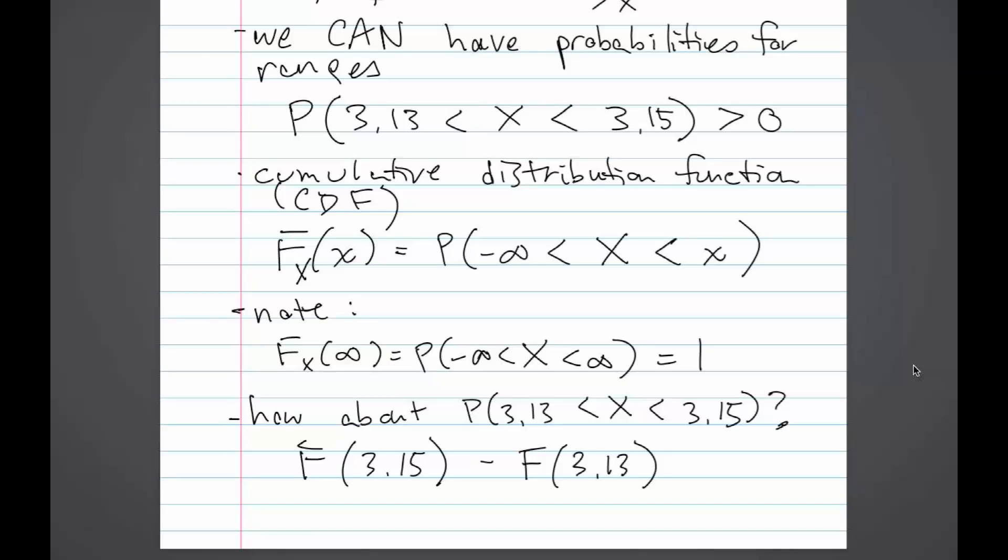The definition of big F of x is the probability that the random variable big X is greater than negative infinity but less than little x.